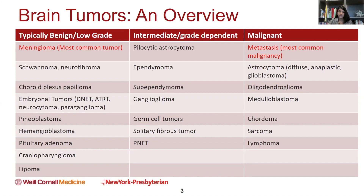This number continues to increase. As the therapies for metastatic cancer continue to improve and our patients are fortunately living longer, we're seeing more and more patients with metastatic disease to the brain, even when they're doing really well otherwise. So that is becoming an increasing patient population that we're addressing.